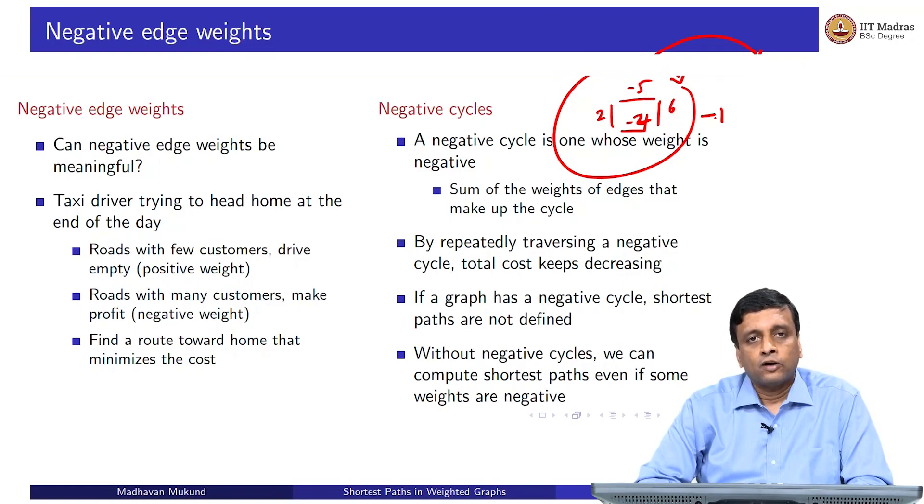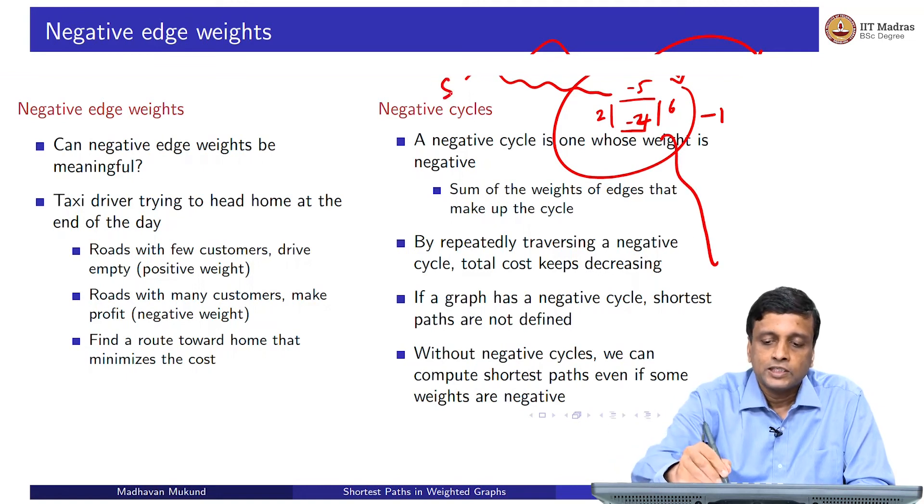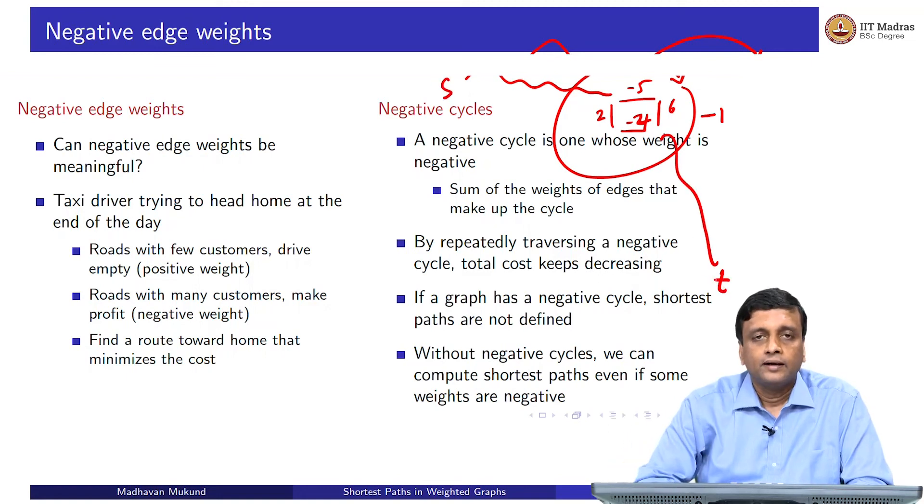By going around the cycle, my cost reduces. If I go around it one more time, my cost reduces again. Now, if I have a path which comes from somewhere and goes somewhere else, if this is my source and this is my target, and I am asking you the shortest path from s to t, then this quantity is not defined, because I could go around the cycle as many times as I wanted to reduce the cost as much as I want. If I have negative cycles, then this notion of shortest path does not exist, it does not make sense. But if I have negative edges and no negative cycles, we could still think of shortest paths and try to solve them.